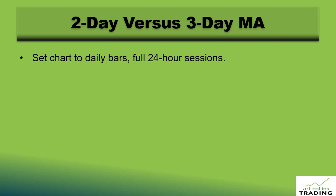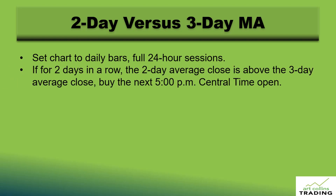Set your charts to daily bars, full 24-hour sessions. You're looking for two days in a row when you get a signal. To go long, the two-day average close must be above the three-day average close — you see that, you buy the next open. We're talking 24 hours, so you'd be looking at the 5 p.m. Central Time open. A Monday session in TradeStation, for example, may show a date of May 19th, but you're actually initiating it on May 18th Sunday evening.